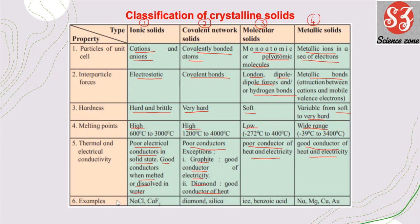Examples: ionic solid — NaCl, CaF₂; covalent network solid — diamond, silica; molecular solid — ice, benzoic acid; metallic solid — sodium, magnesium, copper, gold, silver.